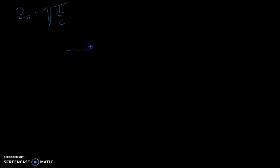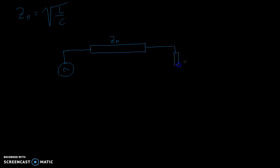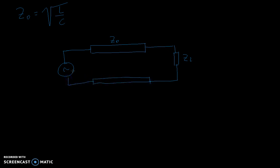In this video we want to add a coordinate system into the transmission line. This is the drawing of a transmission line. You have the driver here, we have the transmission line here with Z0 characteristic impedance. We have a load here which is called ZL, and here we have another rectangle which is the ground of the transmission line.